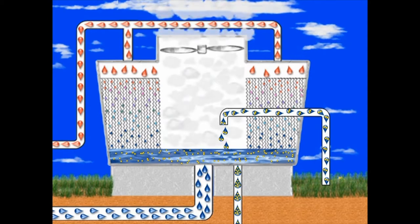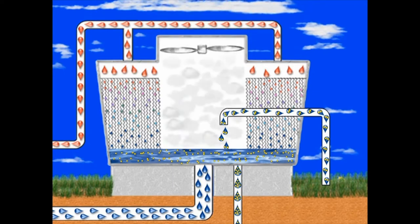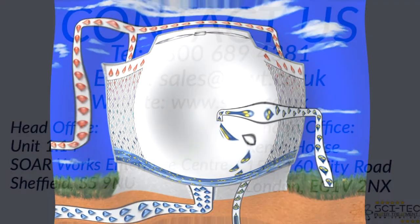During normal operation, evaporation, bleed-off, and make-up are balanced to maintain the proper temperature and water volume while creating a continuous open loop.